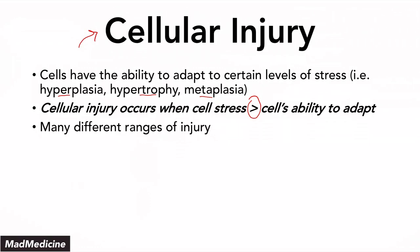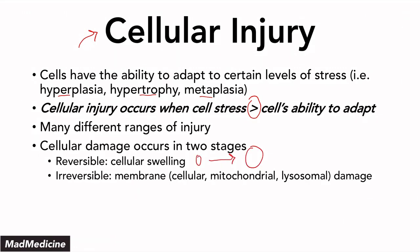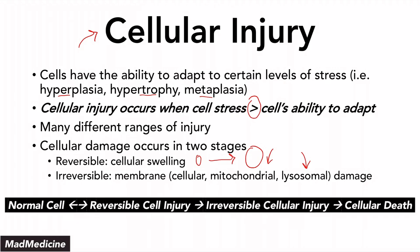Essentially, you have two main stages. The first is reversible injury, or the reversible stage, where you have cell swelling occurring. And then you have the irreversible stage where essentially the membranes are going to get damaged — that means the cellular membrane, but also the mitochondrial and lysosomal membranes. And this is the simplest quality you need to remember for any exam.